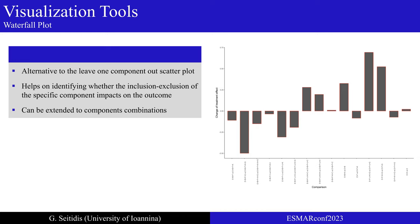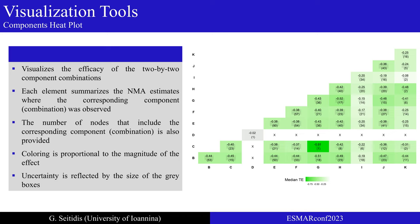Another visualization tool that will carry upon identifying the most promising components is a component heat plot, which visualizes the efficacy of the two by two component combinations. More specifically, each element summarizes the NMA estimates where the corresponding component combination was observed. As a summary measure, the median or the mean can be used. The number of nodes that include the corresponding component combination is also provided in the parentheses of each cell. Letter X is used to highlight any combination of components that are not observed in the network.